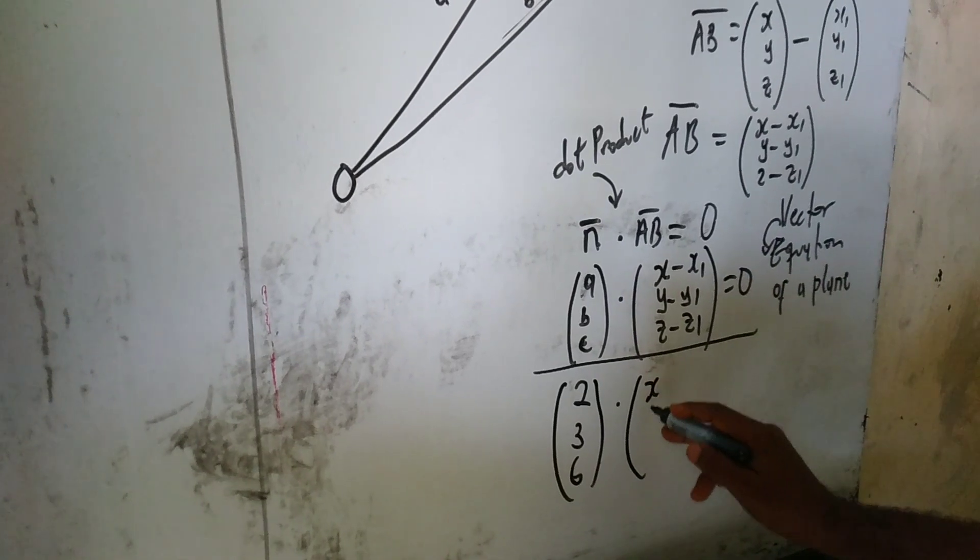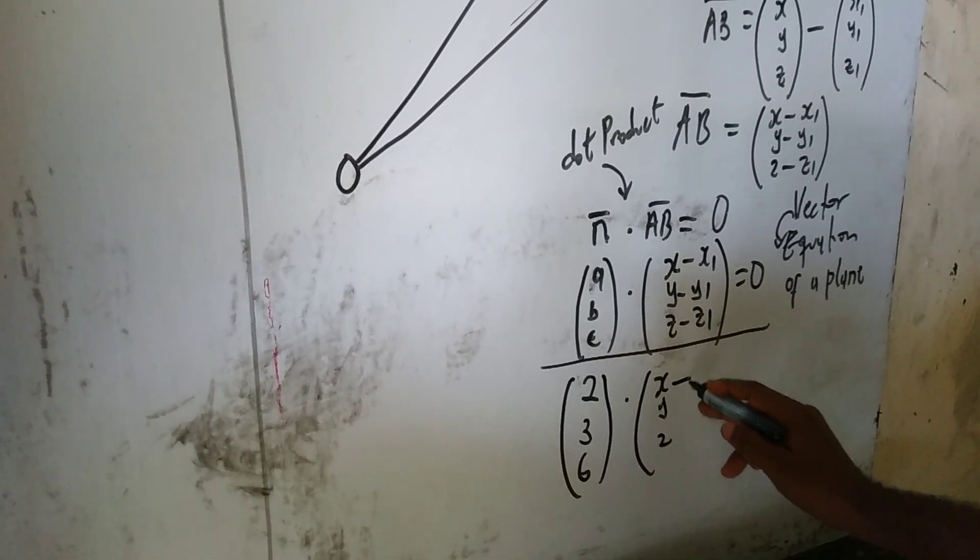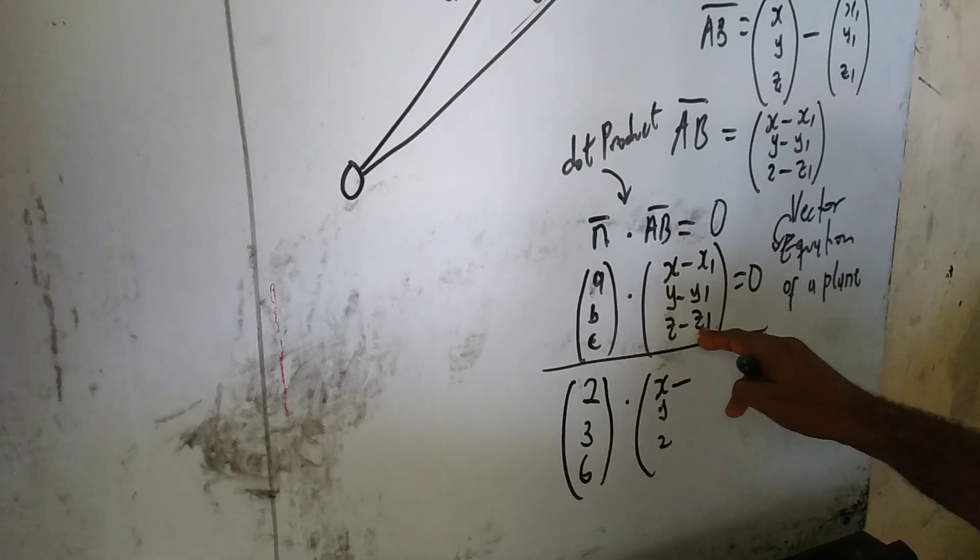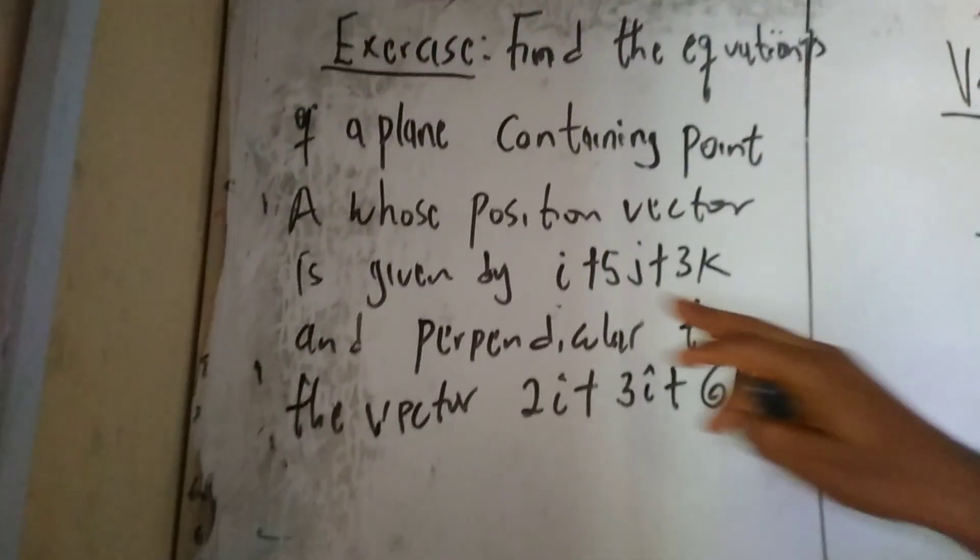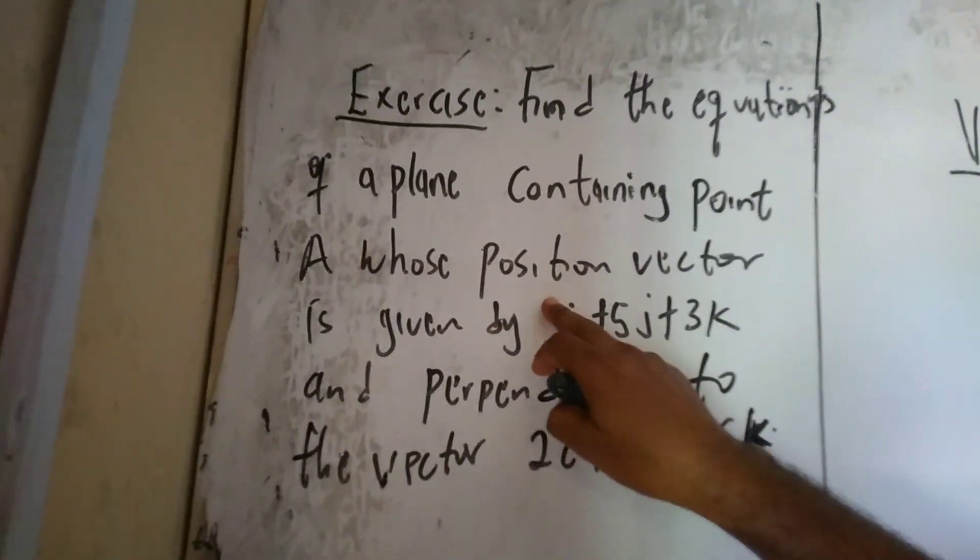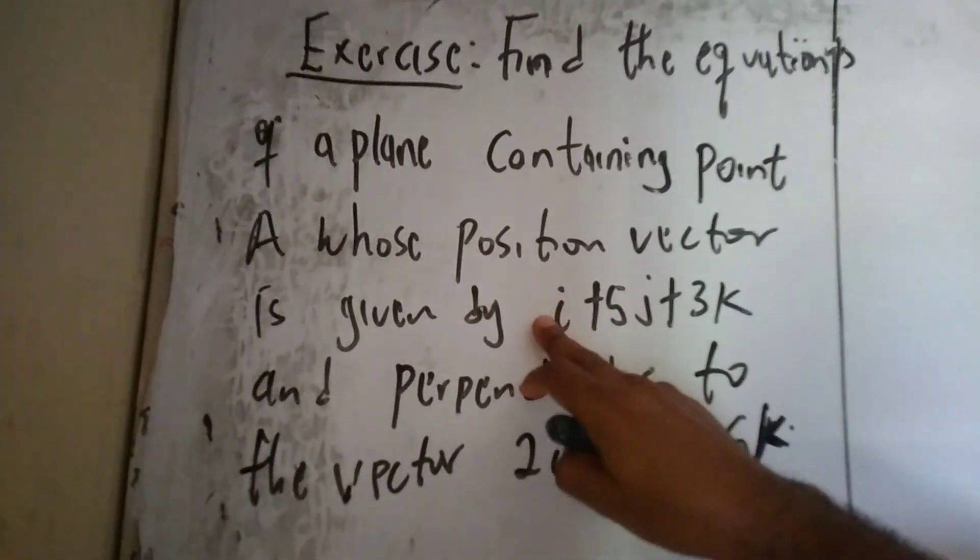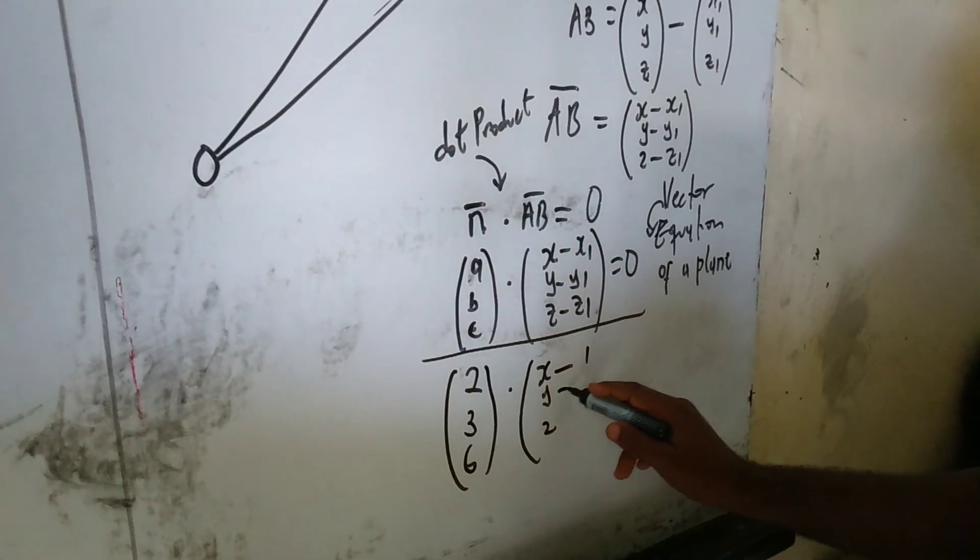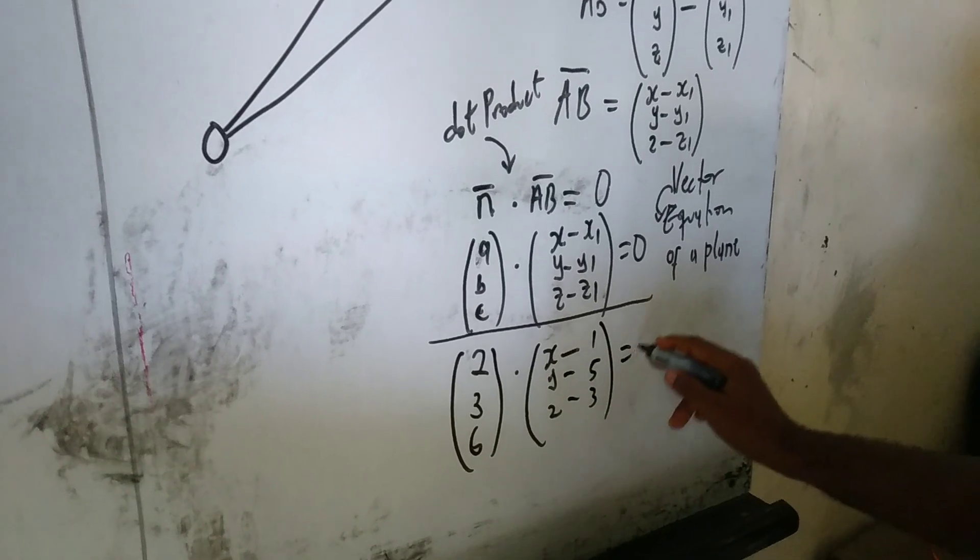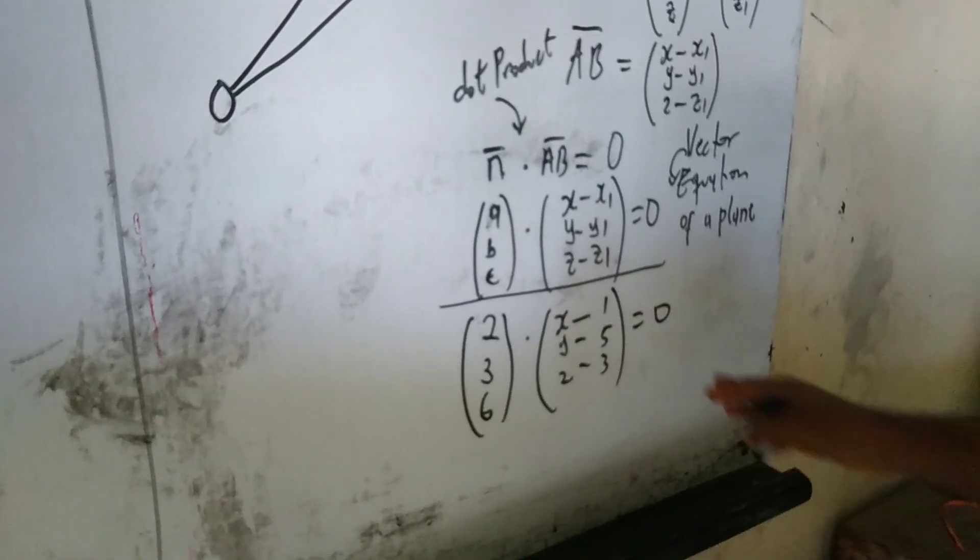Then, I have the coordinates X, Y, and Z minus. For the X1, Y1, Z1, this is the component of this vector A. I will take the coefficient of this component vector. So, that is 1, 5, 3. So, I'm going to write 1, take away 5, and take away 3. Everything is equal to 0.